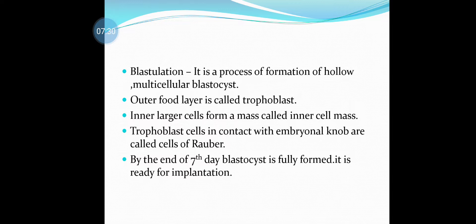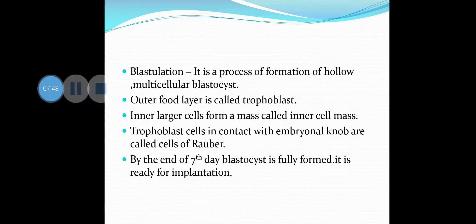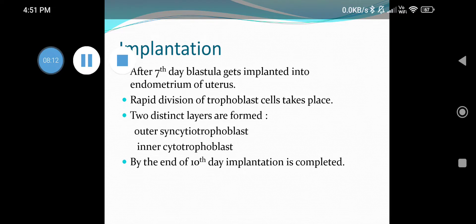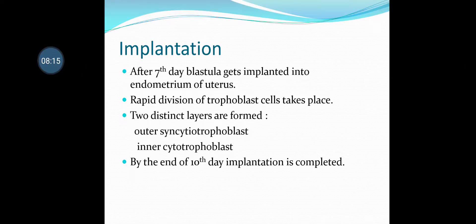The outer food layer is called trophoblast and inner larger cells are called the inner cell mass. Trophoblast cells in contact with the embryonal knob are called Rauber's cells — very important. By the end of the seventh day, the blastocyst is fully formed and is implanted in the endometrium of the uterus. Rapid division of trophoblast cells takes place and two distinct layers are formed: the outer layer called syncytiotrophoblast and the inner layer called cytotrophoblast. By the end of the tenth day, implantation is completed.